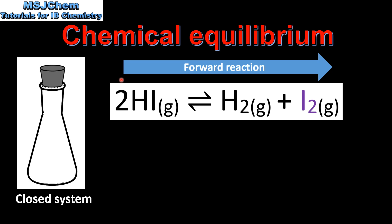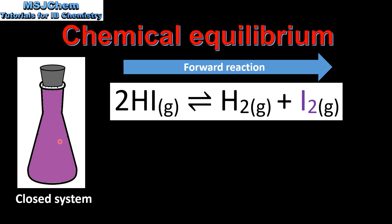As the forward reaction proceeds, hydrogen iodide will decompose to form hydrogen and iodine. Hydrogen iodide is colorless and iodine forms a purple gas, so as the forward reaction proceeds inside the flask we'll see a gradual change from colorless to purple. As time goes on we will see no change in the purple color in the flask, so you might assume that the reaction has stopped.